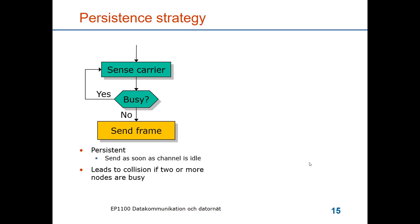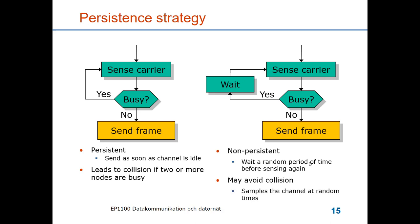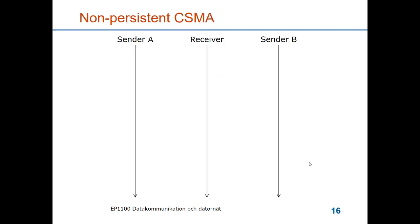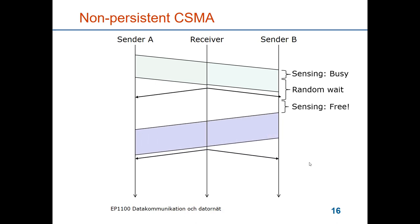Another alternative is non-persistent CSMA. Sense the carrier as before, but if it is busy, wait a random amount of time before sensing again. This means the channel is sampled at different times for different senders. One sender will see the channel as idle before others and start transmitting, while the others will sense the channel as busy when they check. Here is an illustration: sender A sends a frame to the receiver, it propagates to B, B senses it is busy, selects a random waiting time, then after that time senses the channel is free and transmits.